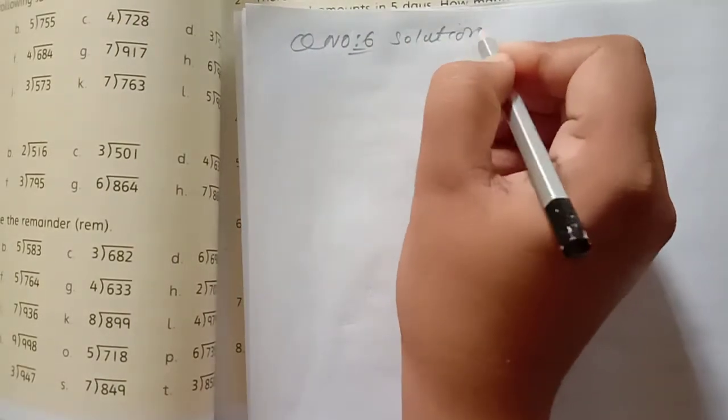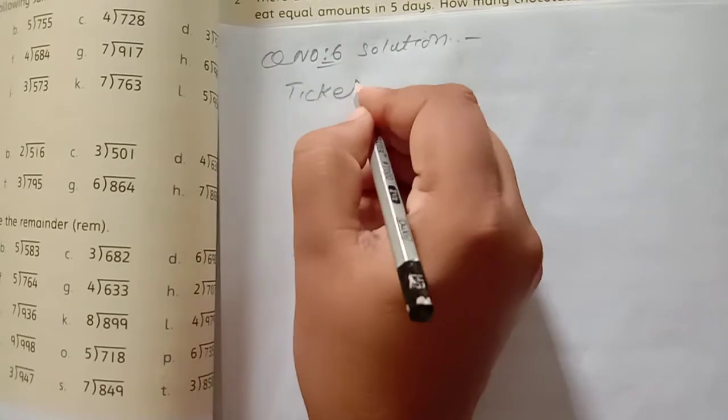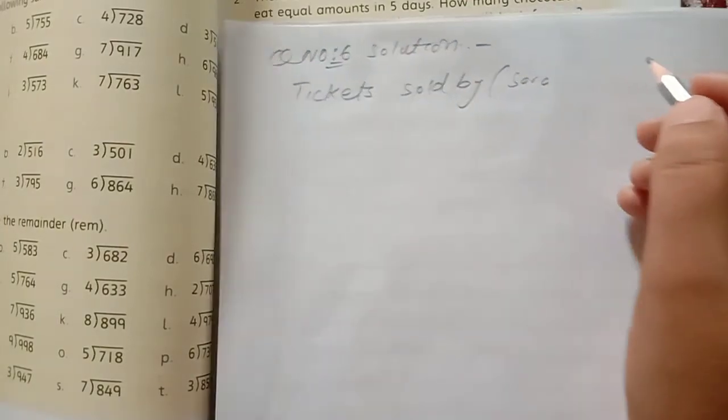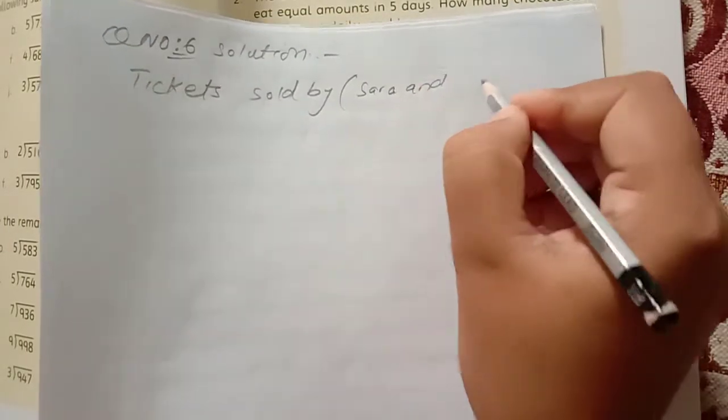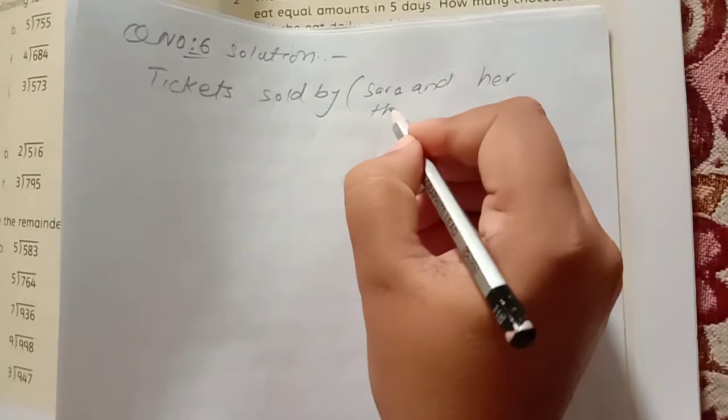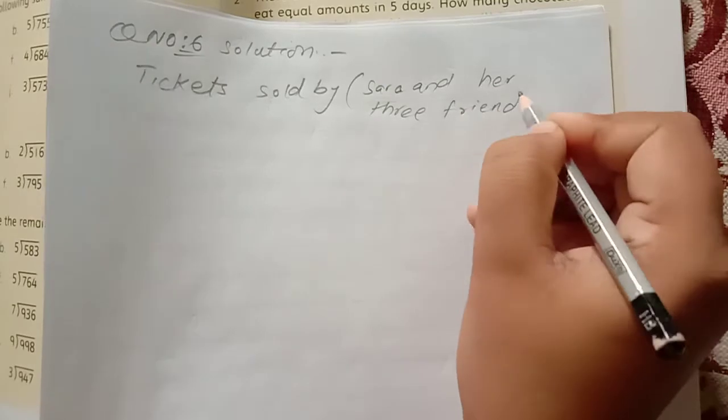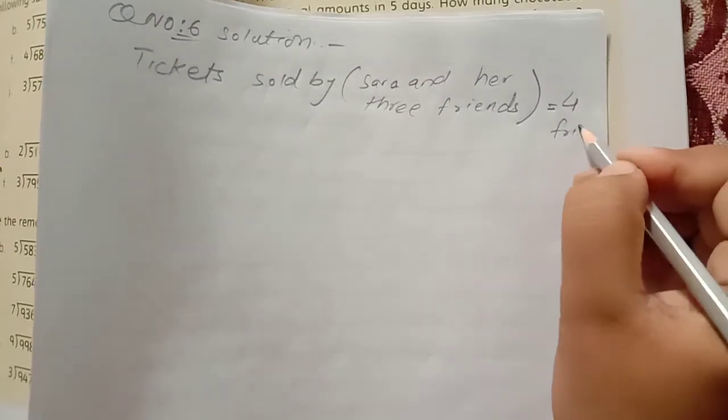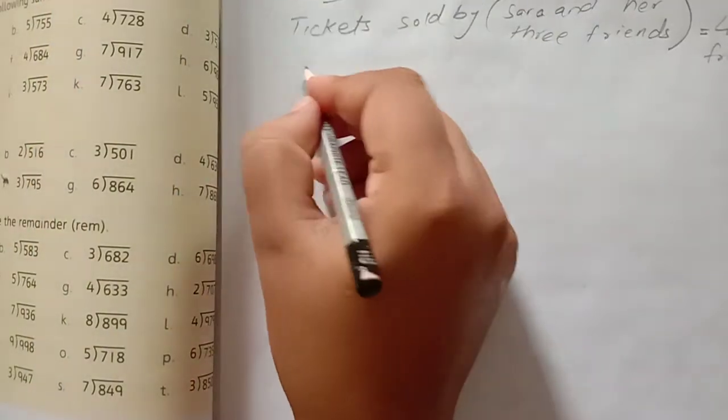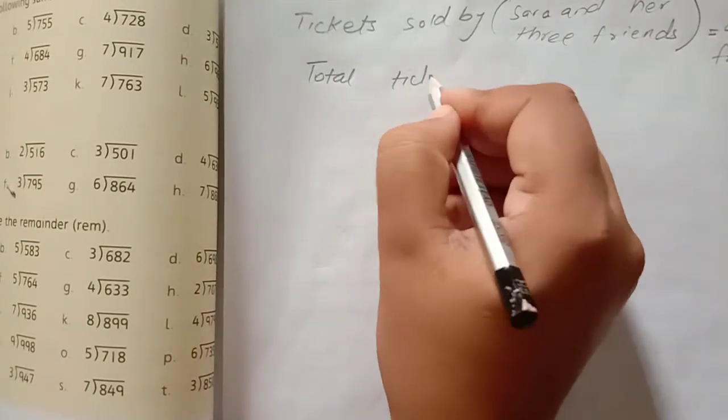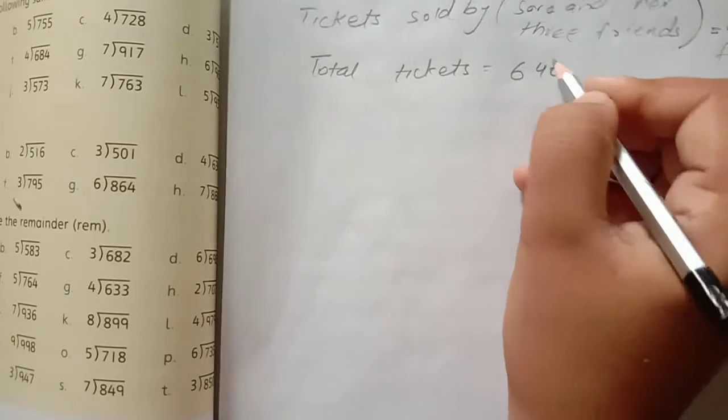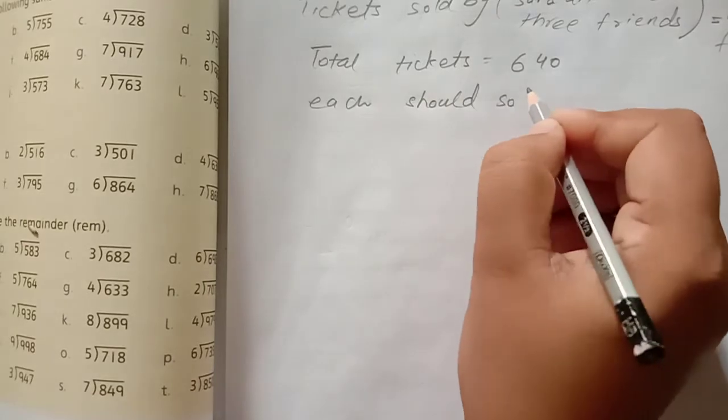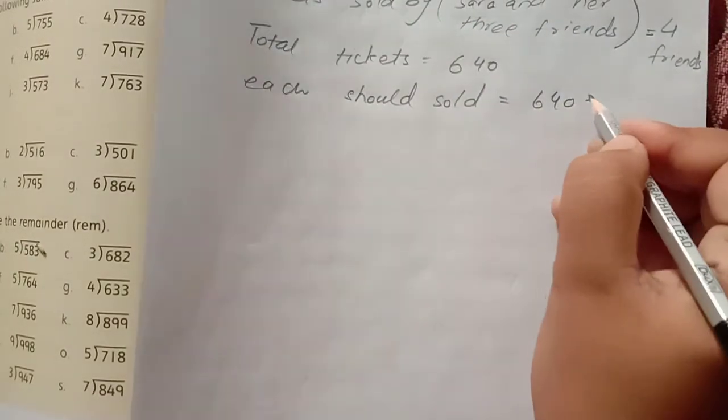Tickets sold by who? One is Sara and her three friends. How many is total? Three and one, four friends. Total tickets, 640 tickets. Each should sold what? We divide, we have answer.